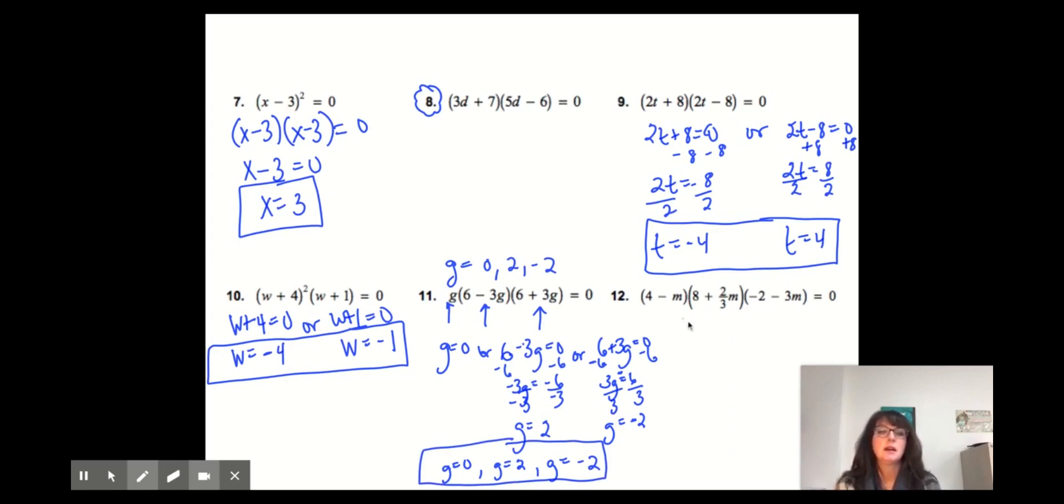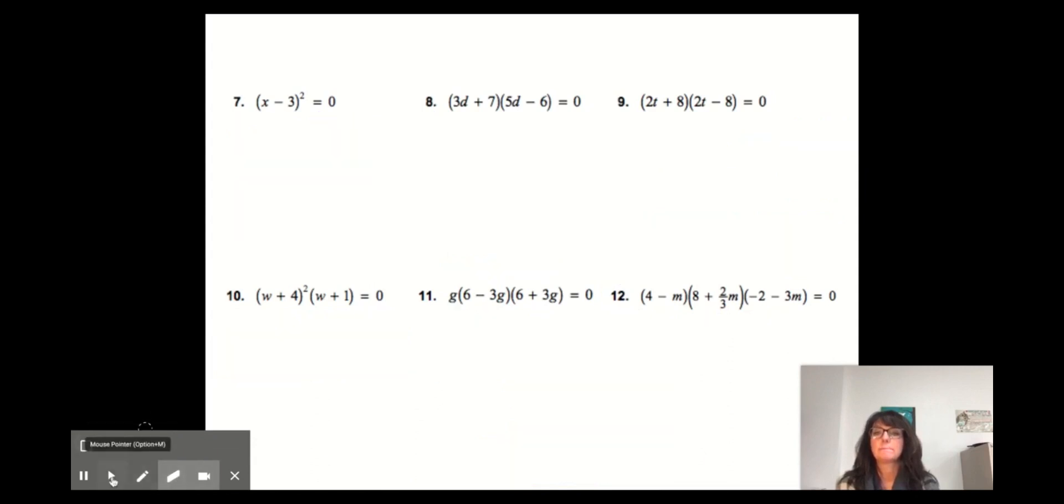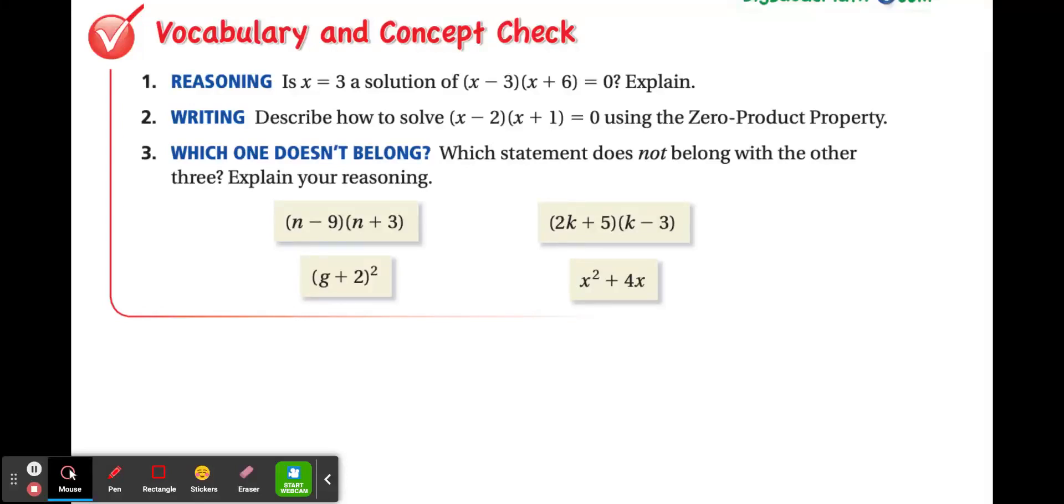So then the last one, one of these factors has to be equal to 0, so I will let you solve number 12 on your own and check your work. Here is the Lesson 7.5 Vocabulary and Concept Check. Please identify the question you will be responding to and use complete sentences. If you have any questions, please let me know. We can discuss them in class tomorrow. Have a great night.